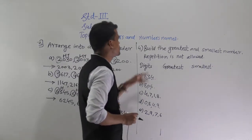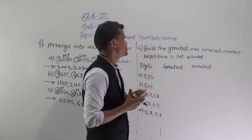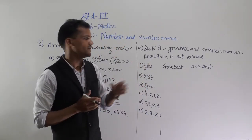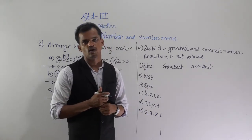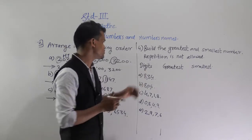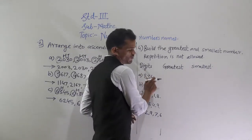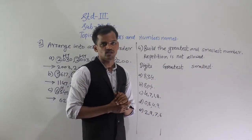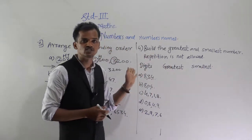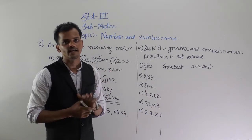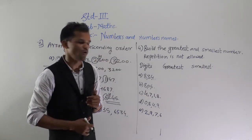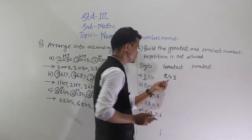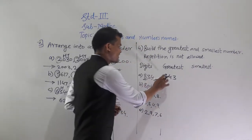The next instruction is to build the greatest and smallest number — repetition is not allowed. Using the digits 8, 3, and 4, we have to form the greatest and smallest numbers. To form the greatest number, arrange the digits in descending order: 8, then 4, then 3. So the greatest number is 843.